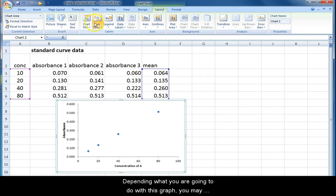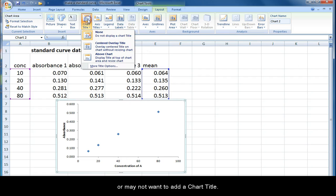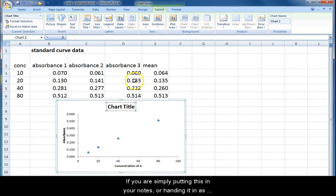Depending on what you are going to do with this graph, you may or may not want to add a chart title. If you are simply putting this in your notes or handing it in as part of an assignment where you don't need to write a figure legend, go ahead and give the chart a title, but make it a meaningful title that is not concentration A versus absorbance. I'm going to call it standard curve for A.